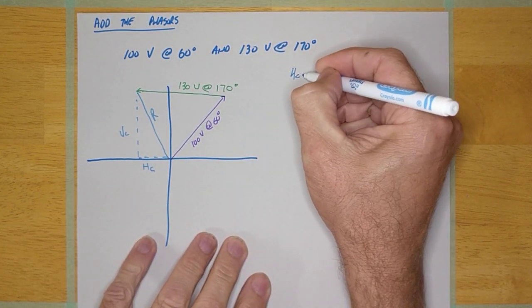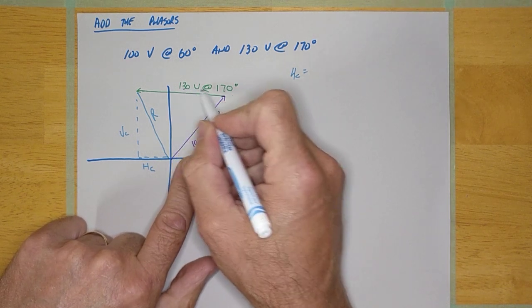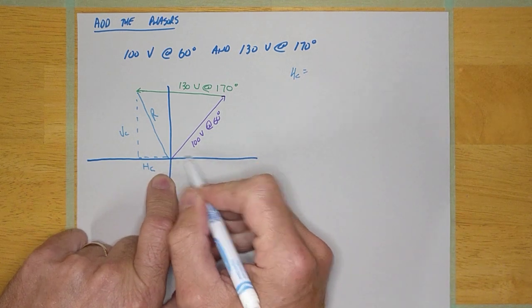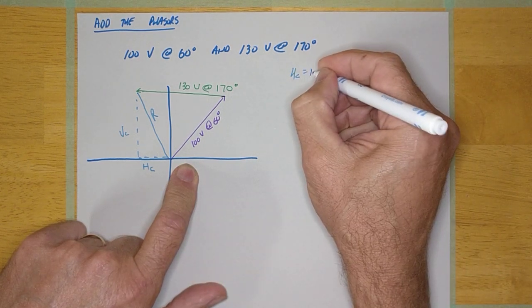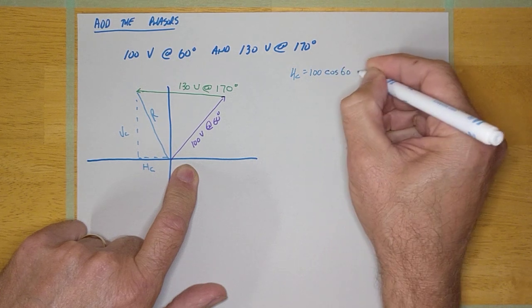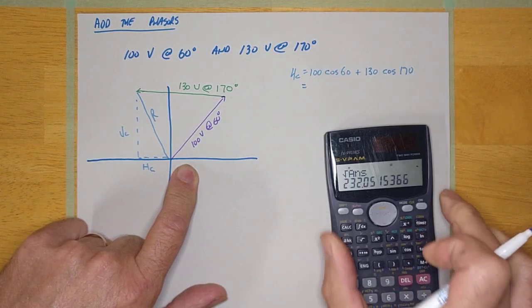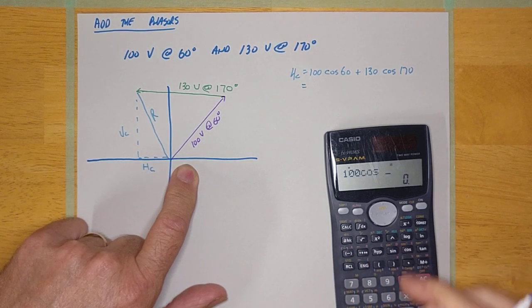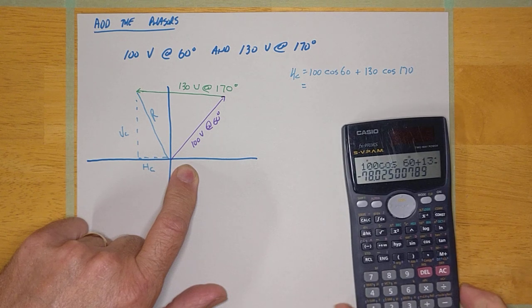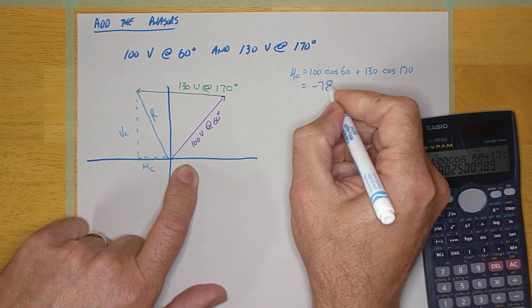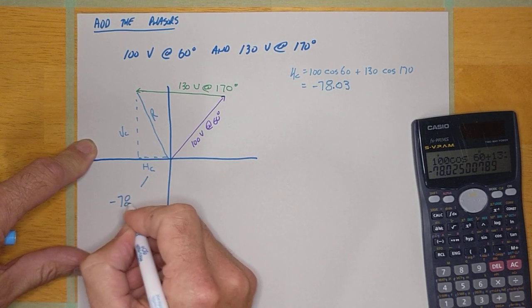I'm going to calculate the horizontal component right here. And it is phasor 1 cosine of its angle plus phasor 2 cosine of its angle. Horizontal components are always adjacent sides and they're always using cos because of SOH CAH TOA. So it is phasor 1 cosine 60 plus phasor 2 cosine 170. Don't even worry about it, just hammer it in there.